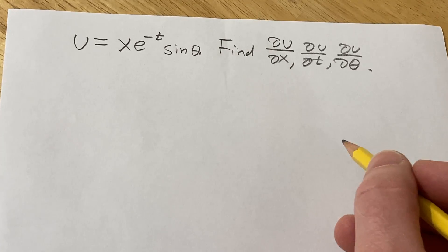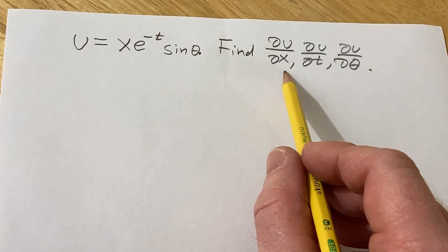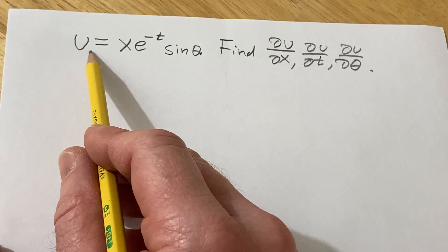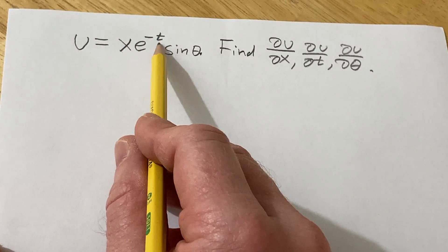Hello, in this video we're going to find the first-order partial derivatives of this function u. So u is actually a function of three variables. It's a function of x, t, and theta.